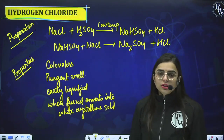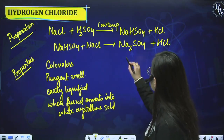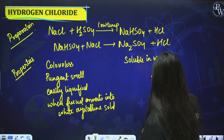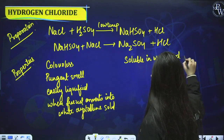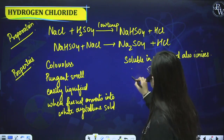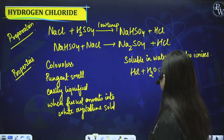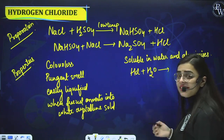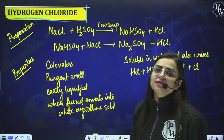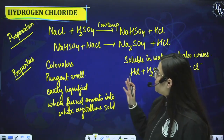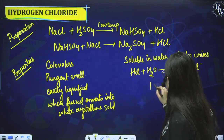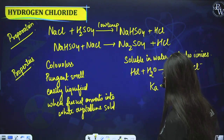Hydrogen chloride is highly soluble in water. When HCl reacts with water, H3O⁺ and Cl⁻ are formed. The Ka value for hydrogen chloride is 10⁷, meaning it is highly acidic. So it has strong acidic character.